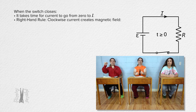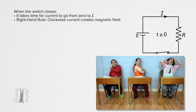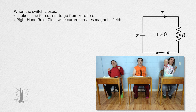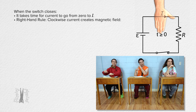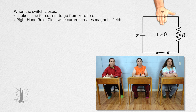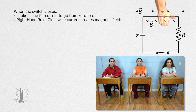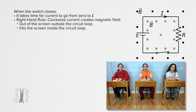According to the right-hand rule, thumb points in the direction of the current, which is clockwise from this perspective. In the top wire, that direction is to the right. Fingers curl with the magnetic field. That means the magnetic field is out of the screen above the top wire and into the screen below the top wire. If you look at all the wires, the magnetic field created by the current in the loop is out of the screen outside the loop and into the screen inside the loop.